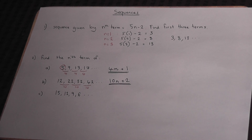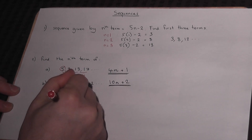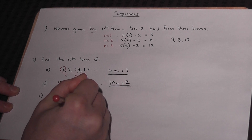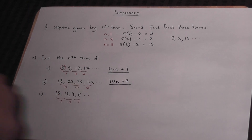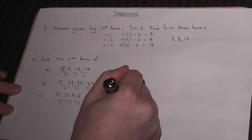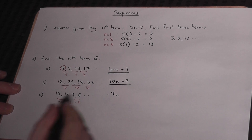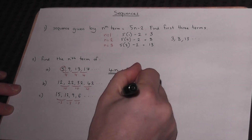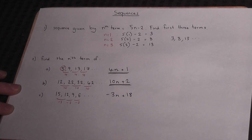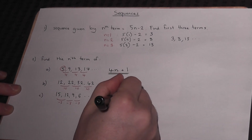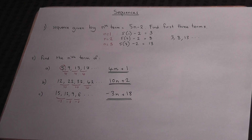The third example is slightly different — this one goes down by 3 each time. There's a subtraction from term to term, so this time it's minus 3n. However, to get from minus 3 all the way up to 15 requires an addition of 18, and so the nth term for the third sequence is minus 3n plus 18.